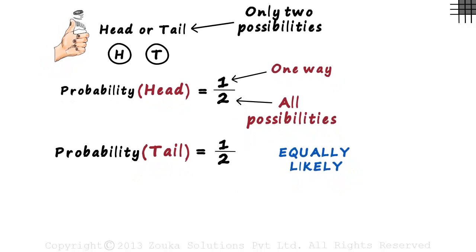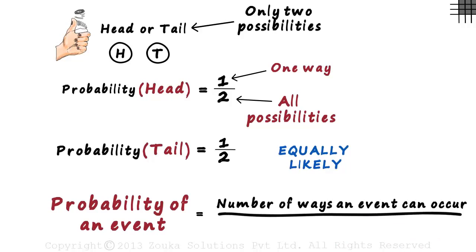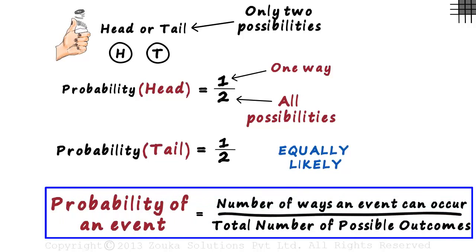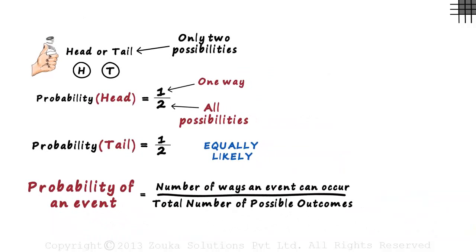Let's try and deduce a formula for the probability of an event. In the numerator, we have the number of ways in which an event can occur. And in the denominator, we have the total number of possible outcomes. It just means how many possibilities out of the total possibilities. This formula will be a lot clearer as we see more and more examples. The formula is not important. What's important is what we are going to see next.